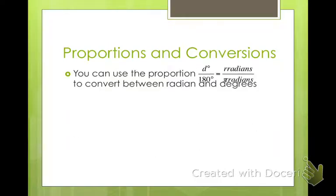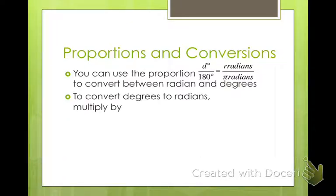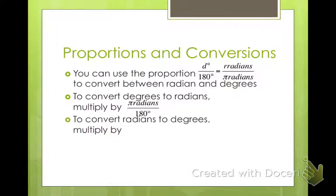For proportions and conversions, we can use the proportion d degrees over 180 degrees equals r radians over π radians. That's how we get that 30 degrees is π over 6. To convert degrees to radians, you multiply by π radians over 180 degrees. And to convert radians to degrees, you multiply by 180 over π radians. Multiply by π divided by 180, or multiply by 180 divided by π.